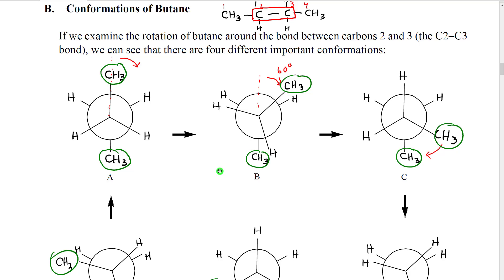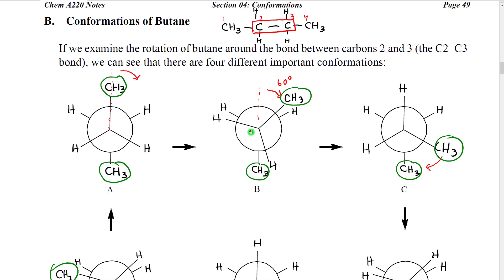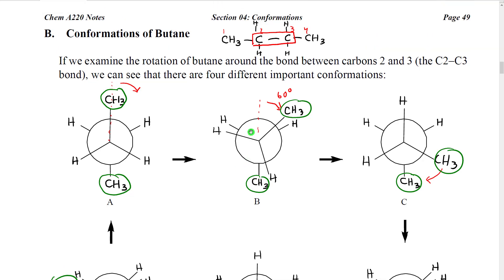We don't just look at the conformations of ethane, which is an extremely simple molecule. What we're going to do now is look at butane, where one hydrogen on each of the carbons of ethane has been replaced by a larger group — a methyl group.